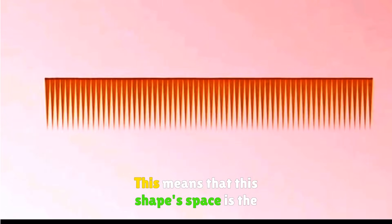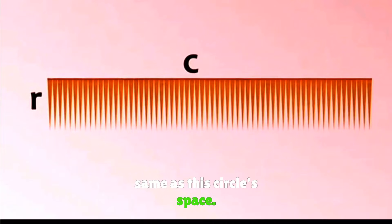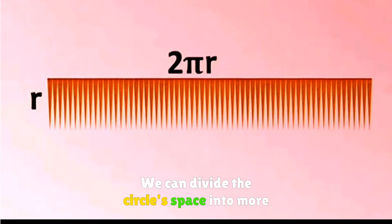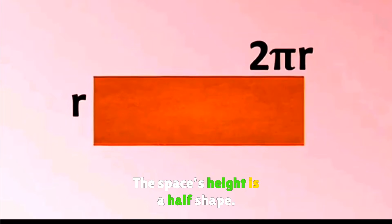This means that this shape's area is the same as this circle's area. We can divide the circle space into more and more smaller shapes. The space's height is r, the width is 2πr.